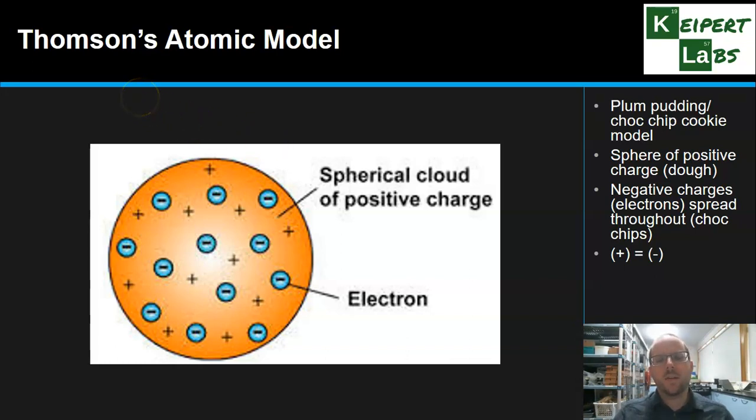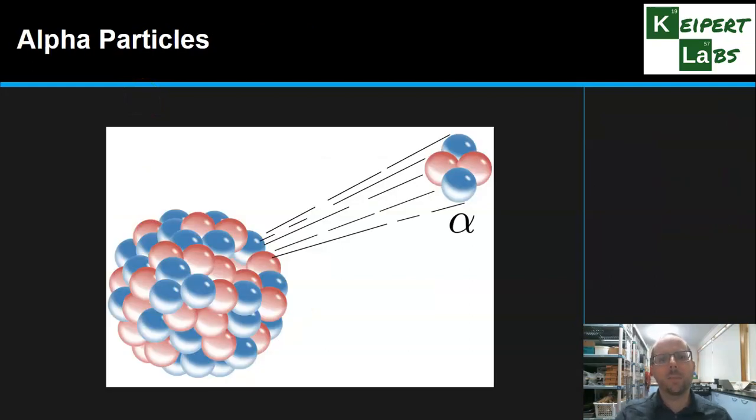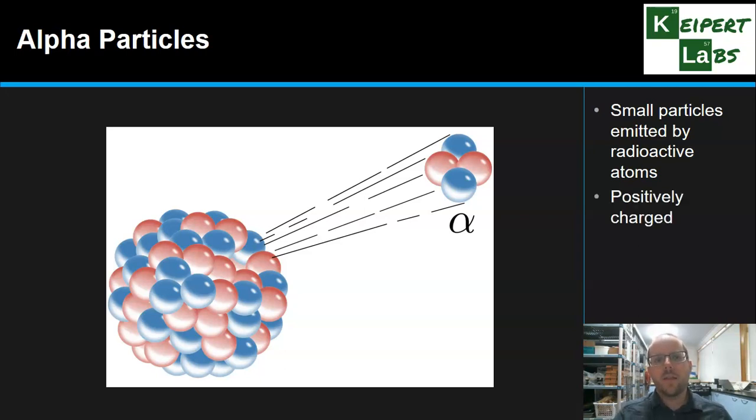This is the atomic model we were working with, where we knew the existence of the subatomic particle called the electron, but further subatomic particles were not yet evident to scientists at that time. Then we look at alpha particles. Alpha particles had been discovered in the context of radioactivity - they were determined to be small particles that were emitted by radioactive atoms like uranium. They were positively charged particles with a relative charge of plus two, and they were really small, which meant they could be used as bullets or projectiles fired at other substances.